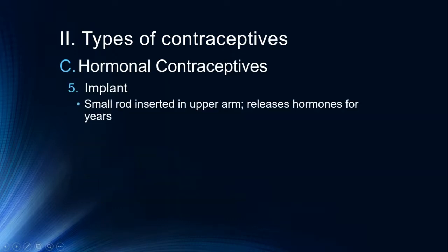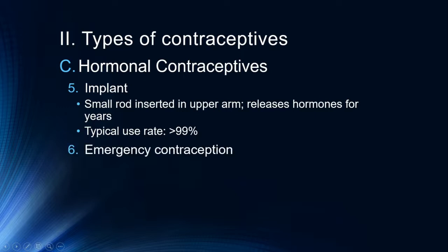There are also implants available — small rods that are inserted into the upper arm that release hormones for years. The typical use rate here is greater than 99%. So IUDs and rod implants are the top methods for their effectiveness in preventing pregnancy. Finally, there is emergency contraception, sometimes referred to as the morning-after pill.